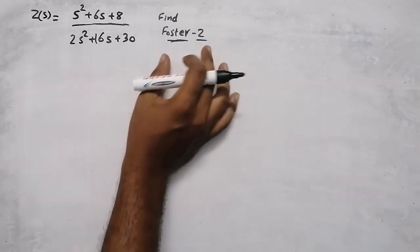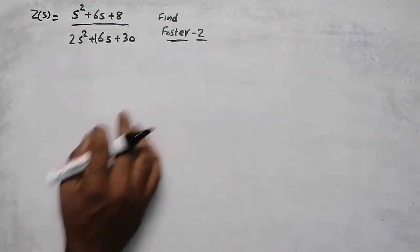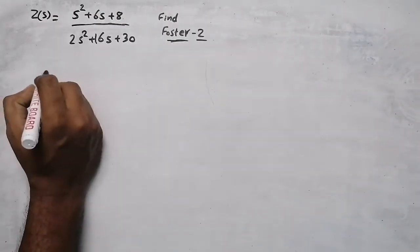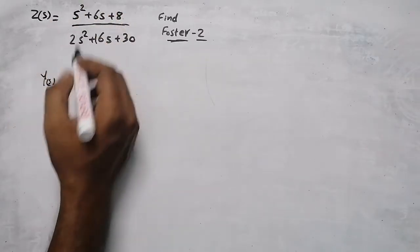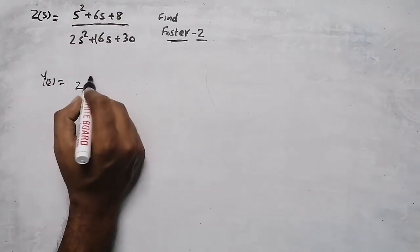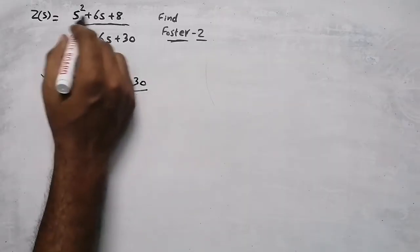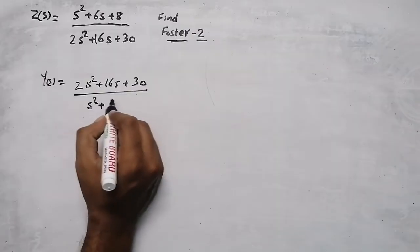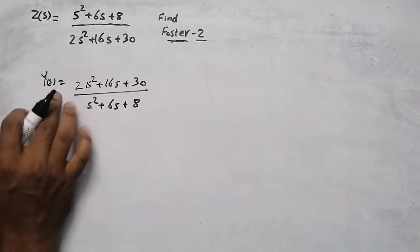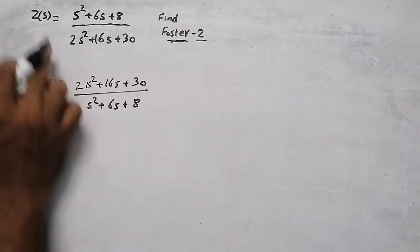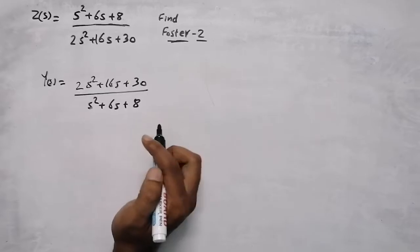In this video we need to find Foster Form 2 network of this impedance function. For finding Foster Form 2 we need admittance, that is Y(s). To find Y(s), just take the reciprocal: 2s² + 16s + 30 divided by s² + 6s + 8. In Y(s), the denominator becomes the numerator and the numerator becomes the denominator.